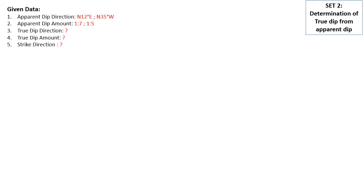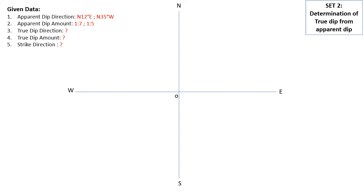The given data: like a previous problem, you have to first draw a north-south-east-west line and name them accordingly. Name the intersection as O. Now let us start plotting — north 12 degrees east and north 35 degrees west — and the corresponding apparent dip amounts.